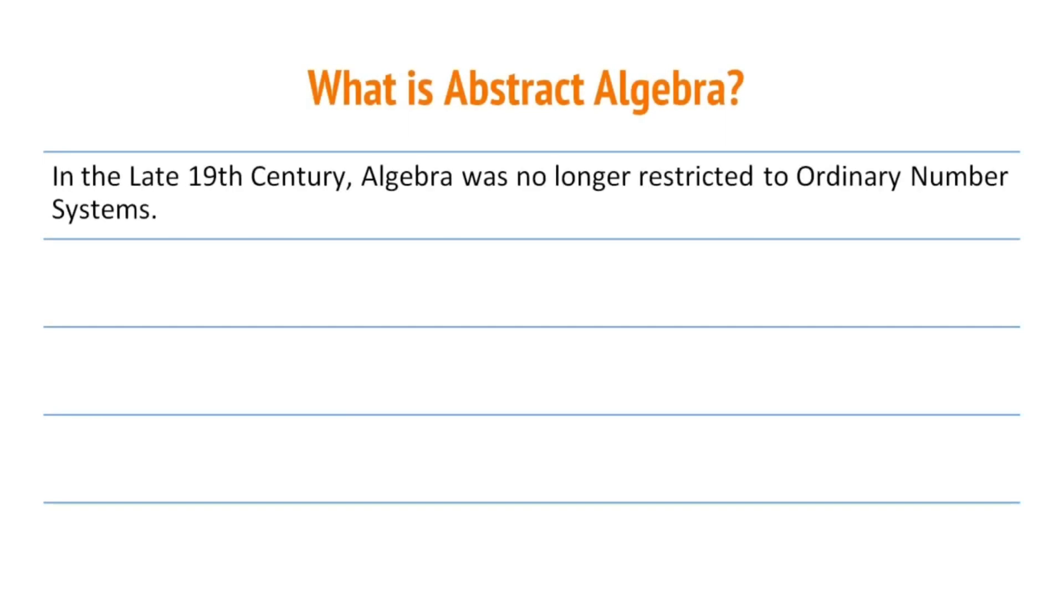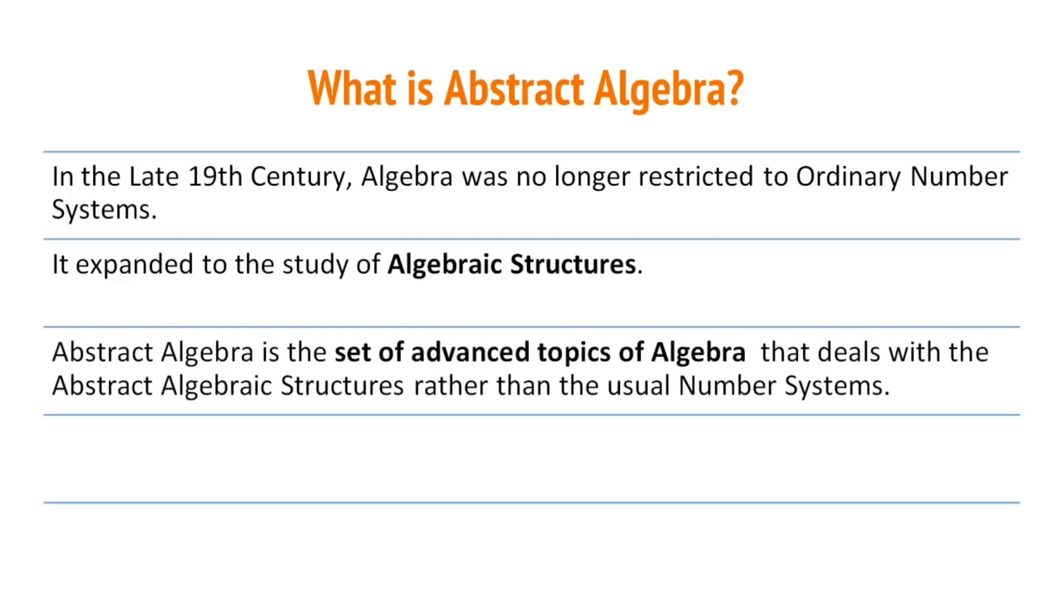In the late 19th century, algebra was no longer restricted to the ordinary number system. It expanded to the study of algebraic structures. Thus, abstract algebra can be defined as the set of advanced topics of algebra that deals with the abstract algebraic structures rather than the usual number systems.